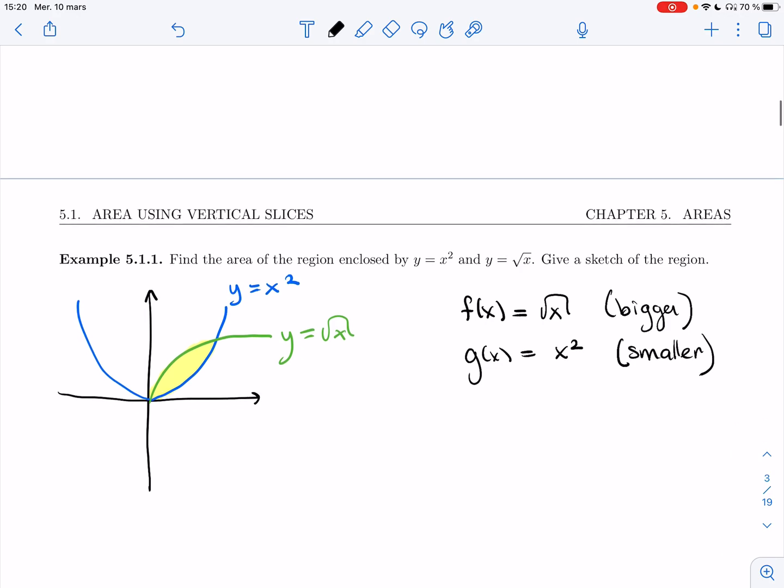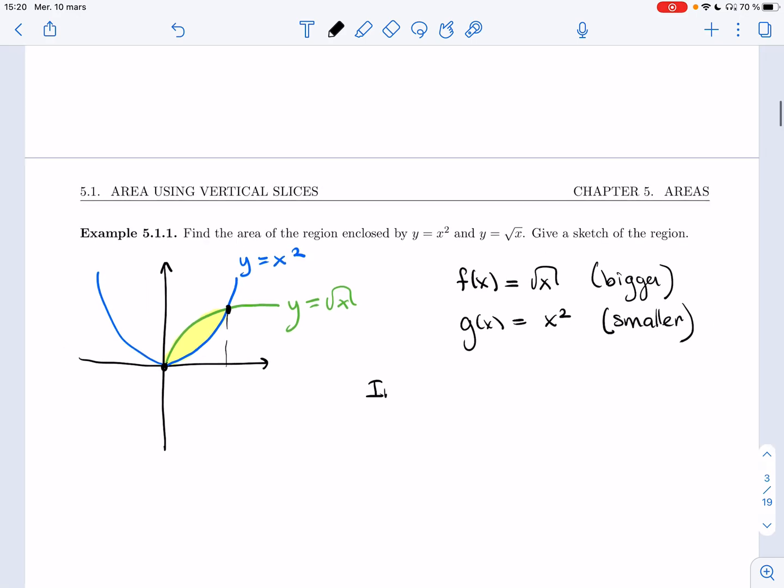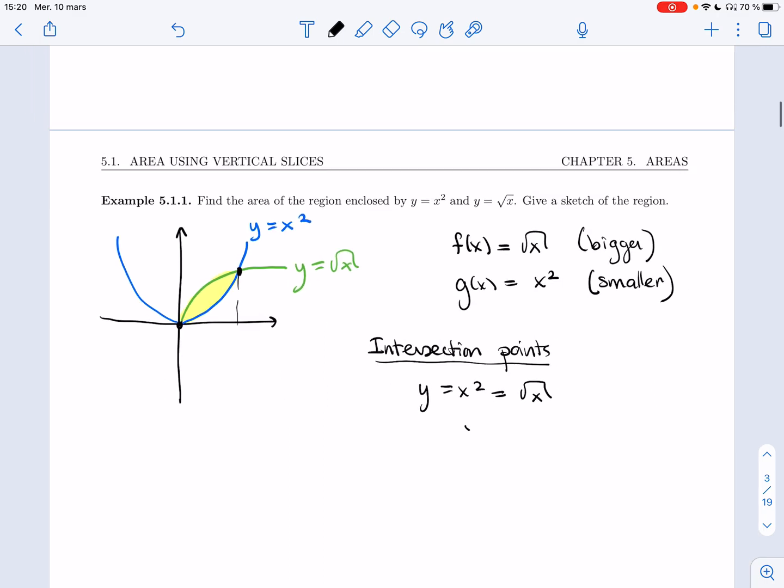I need to find what the values of x are at the two endpoints. So those, in this case, are going to be intersection points. I need to find when these two curves intersect. So I need x squared to be equal to root of x. To solve this, I'm going to square both sides to get rid of the square root.